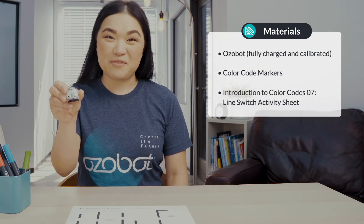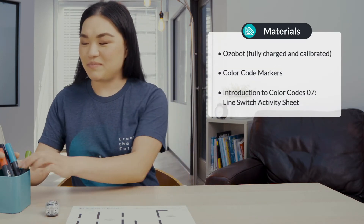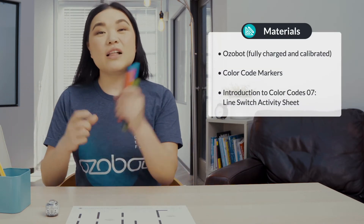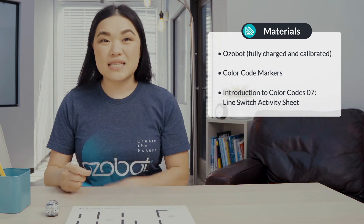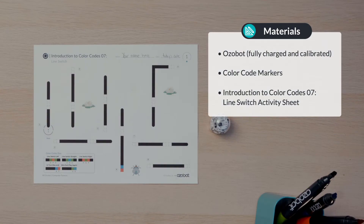For today's lesson you will need an Ozobot fully charged and calibrated, color code markers, and your introduction to color codes lesson 7 line switch activity sheet.